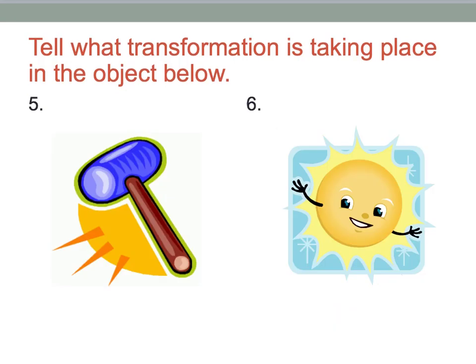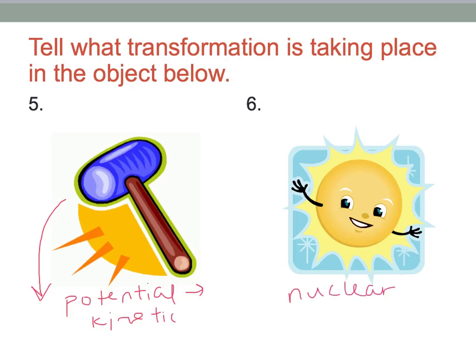Imagine a hammer being held up and then swinging down. If it's held up in the air, we're starting with potential energy. As it swings down to the ground, it becomes kinetic. Finally, with sunshine, the reactions taking place inside the sun involve nuclear energy, and we end up with light. In the summertime you might also argue we end up with heat, so both of those answers work.